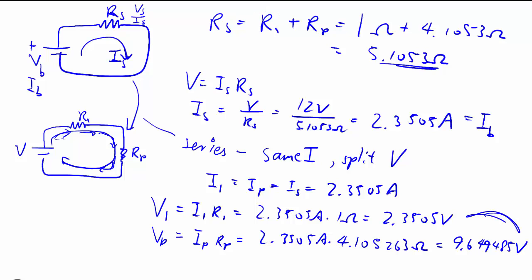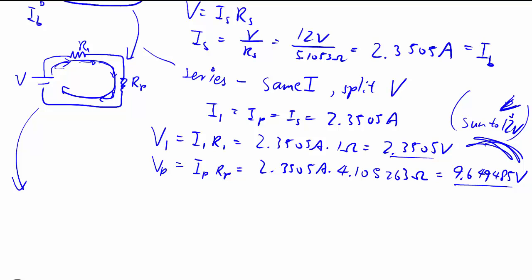And then VP is equal to IP RP. And you can double check that these two add up to 12 volts, which is the overall voltage that we're splitting, which is my Vs. So that's just a quick check. But that's how you get using the Ohm's Law, because we're just talking about one particular component.